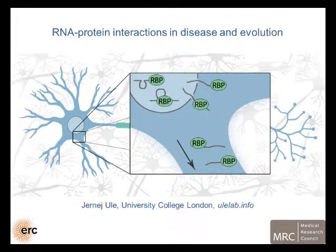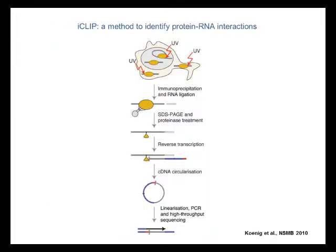Neurons are highly polarized cells that use unique pathways to control gene expression. In particular, this is evidenced by the complexity of protein-RNA interactions. Here I will be presenting work where we show the importance of these interactions for disease and evolution. The work relies on a new method that we developed where we can identify the interactions between protein and RNA on a genome-wide level.